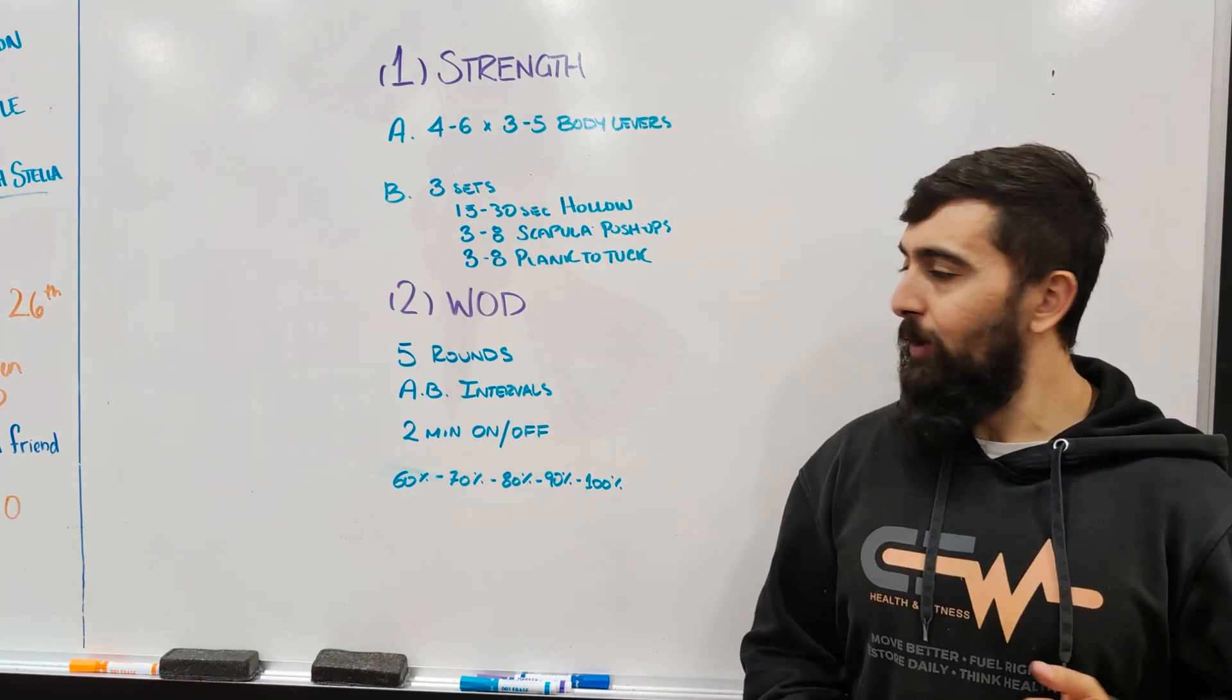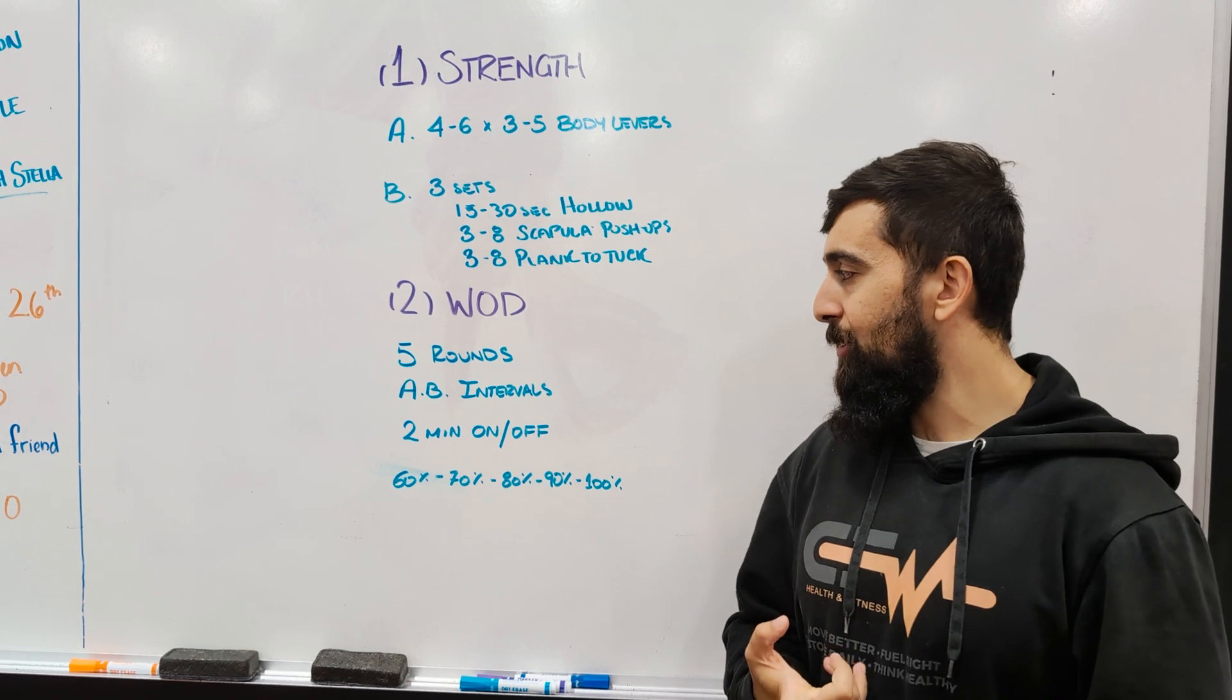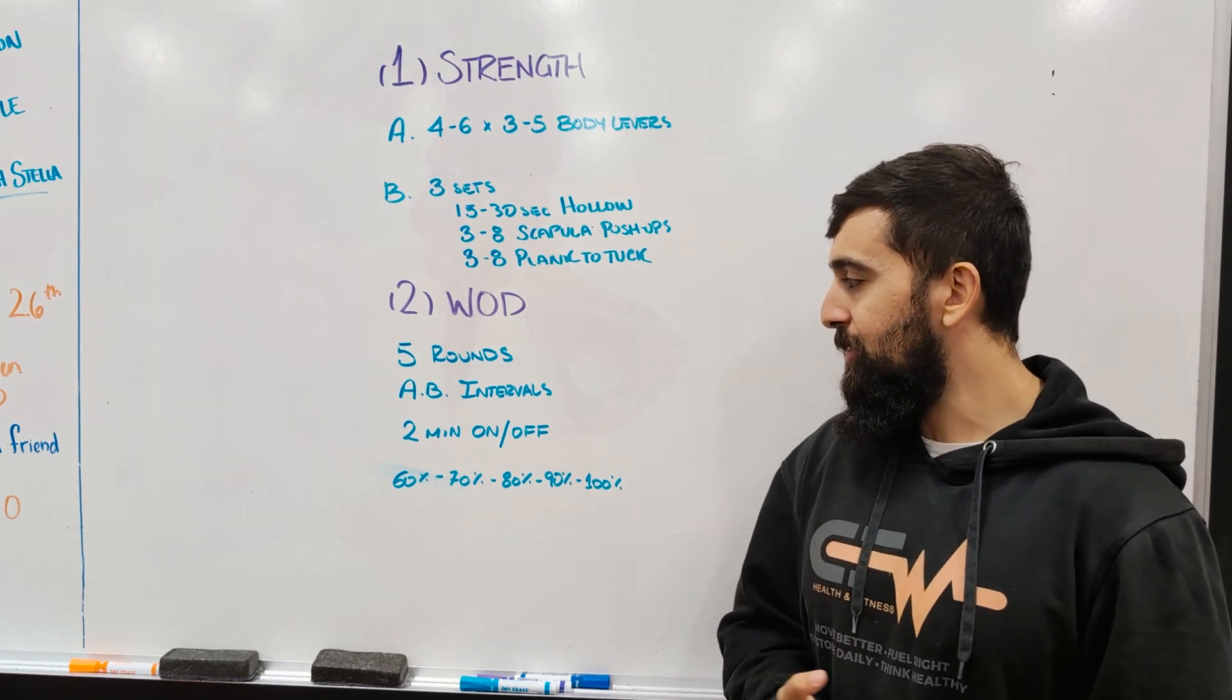When we're done that strength work, we're going to get sweaty on the assault bike. We're going to go five rounds of assault bike intervals, going two minutes on, two minutes off.